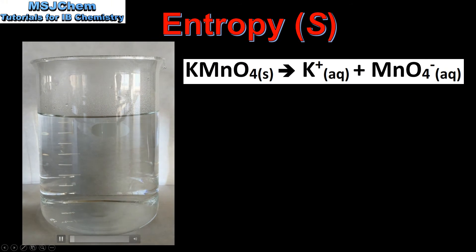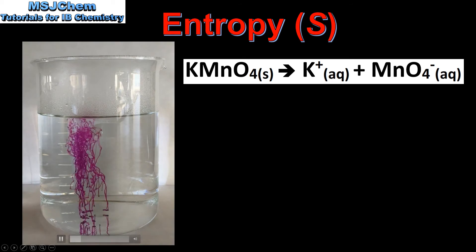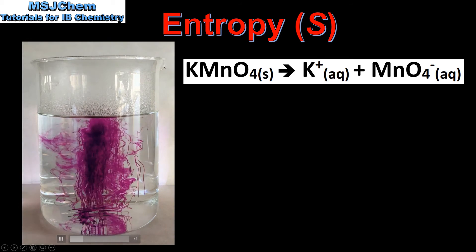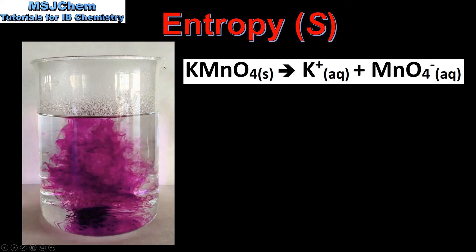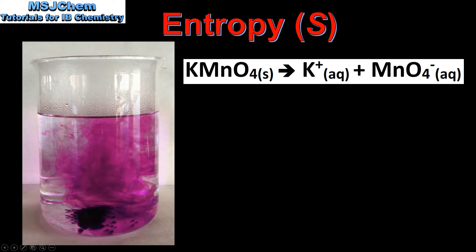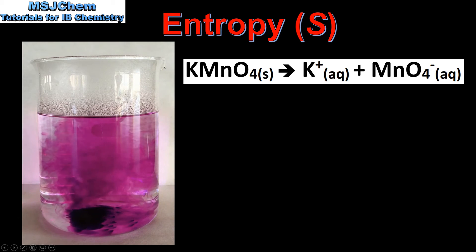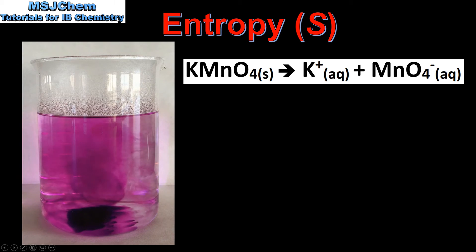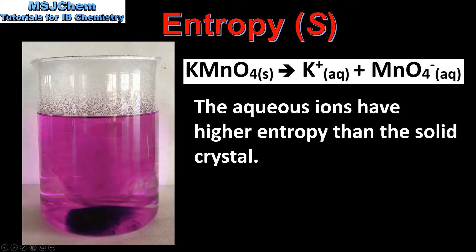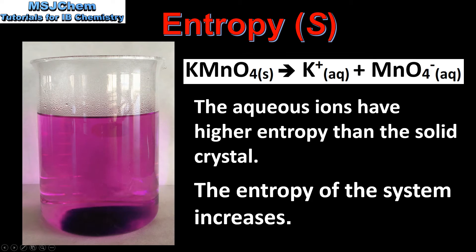Next we'll watch a video of potassium permanganate being added to hot water. In this reaction, one mole of solid ionic compound dissociates into two moles of aqueous ions. The aqueous ions have higher entropy than a solid crystal, so the entropy of the system increases.